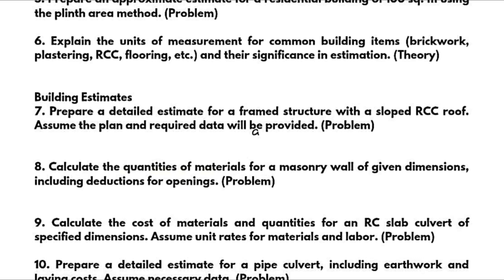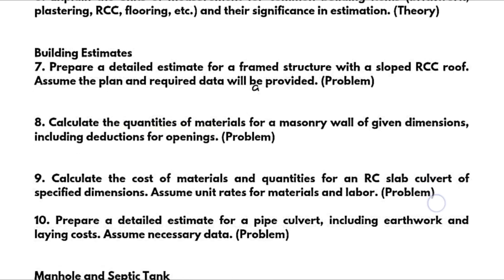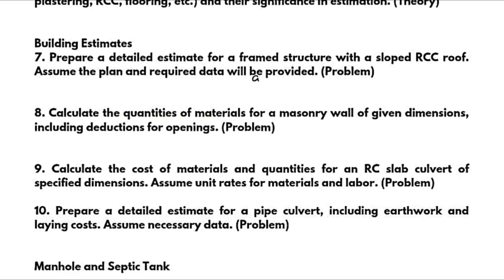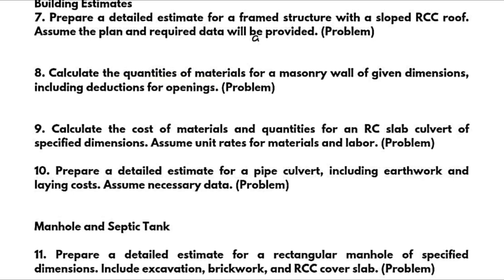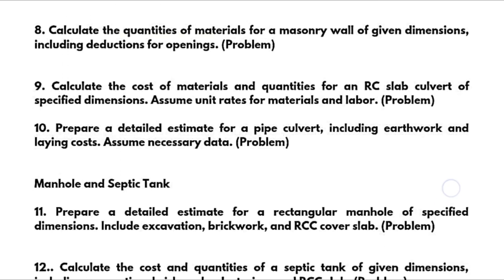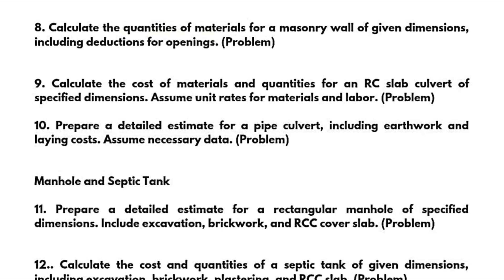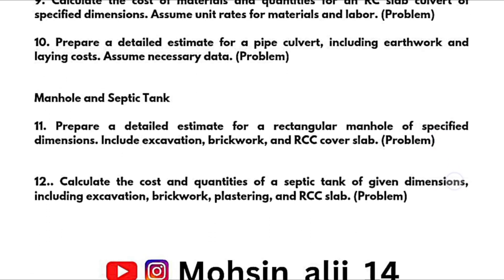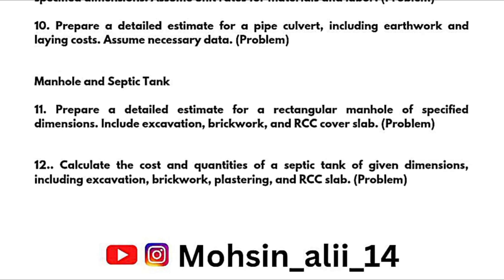Under building estimates in Module 1: prepare a detailed estimate for a framed structure with a sloped RCC roof — data will be available in the question paper. Calculate quantities of materials for a masonry wall of given dimensions including deductions for openings. Calculate cost and quantities for an RCC slab culvert of specified dimensions assuming unit rates. Prepare a detailed estimate for a pipe culvert including earthwork and laying costs. Super important: prepare a detailed estimate for a rectangular manhole including excavation, brickwork, and RCC cover slab, and calculate cost and quantities of a septic tank including excavation, brickwork, plastering, and RCC slab.